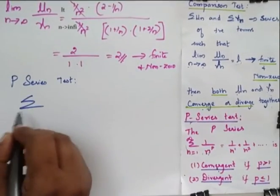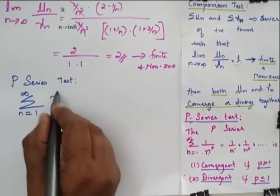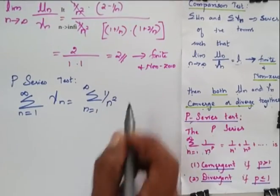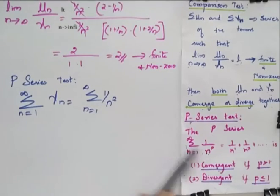Now my p-series test is for my vn. My vn is 1 by n square. So when I compare this with this, I am going to find the value of my p.